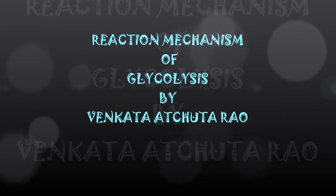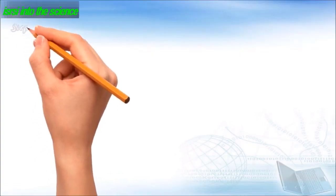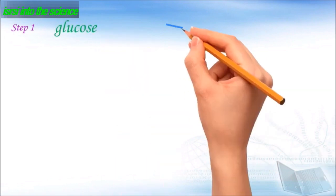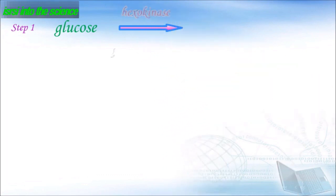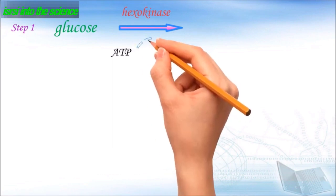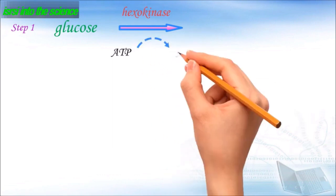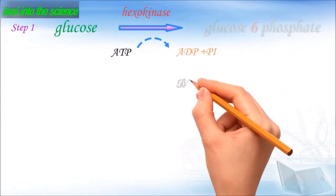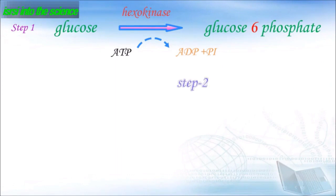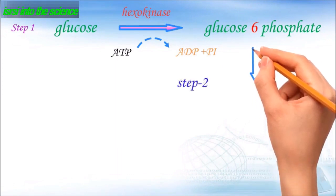Hello friends, welcome to ISRSA. Today's topic is glycolysis and the reaction mechanisms involved in glycolysis. In step 1, glucose is converted to glucose-6-phosphate by the enzyme hexokinase, utilizing ATP. The ATP is converted to ADP by release of a phosphate molecule, and this phosphate is added to glucose to form glucose-6-phosphate.